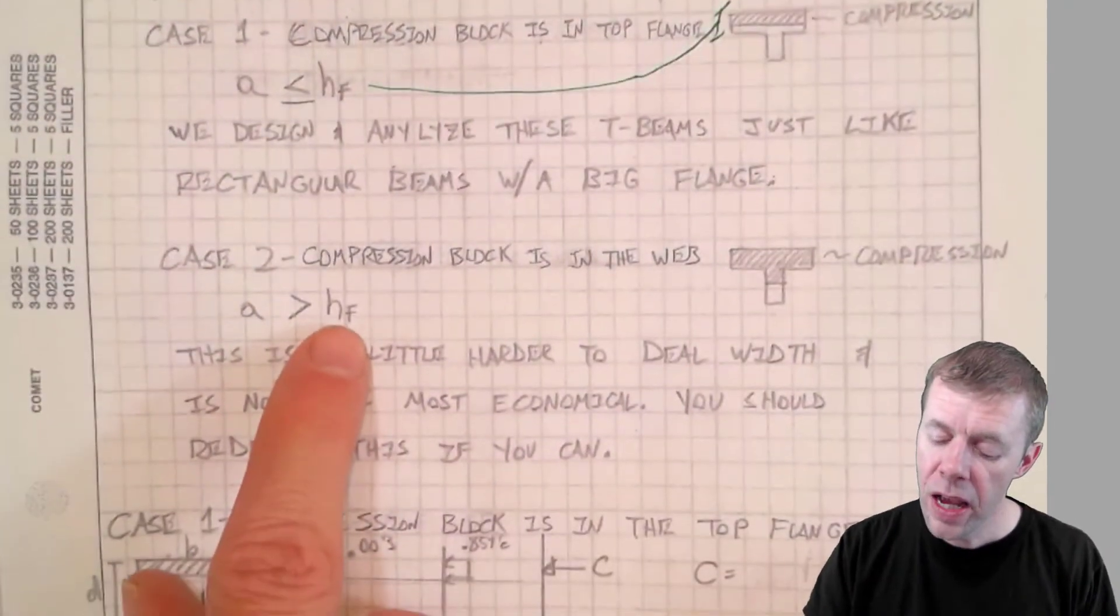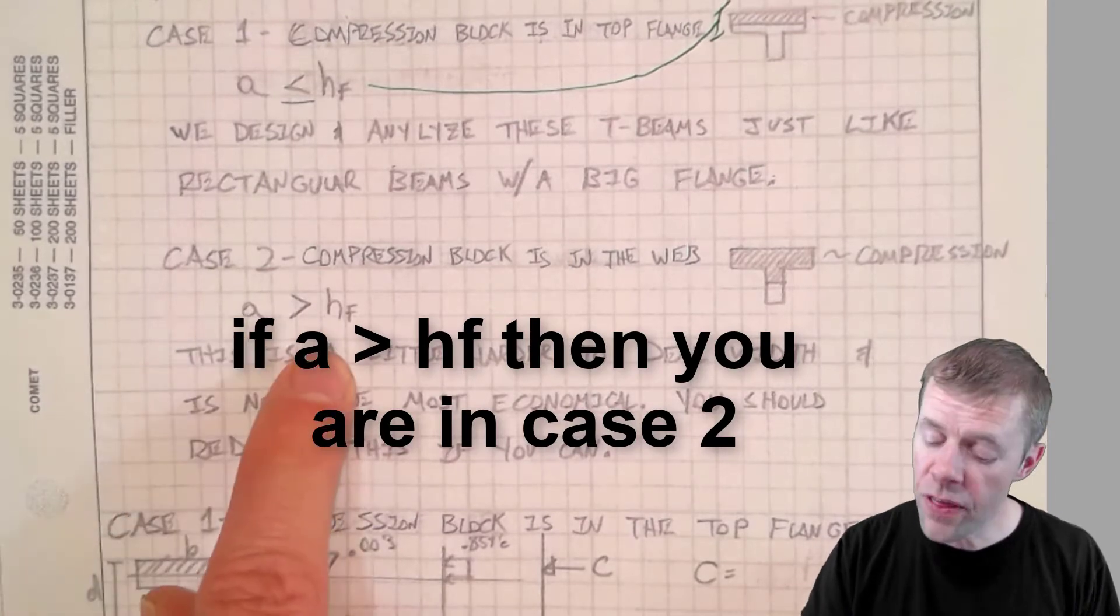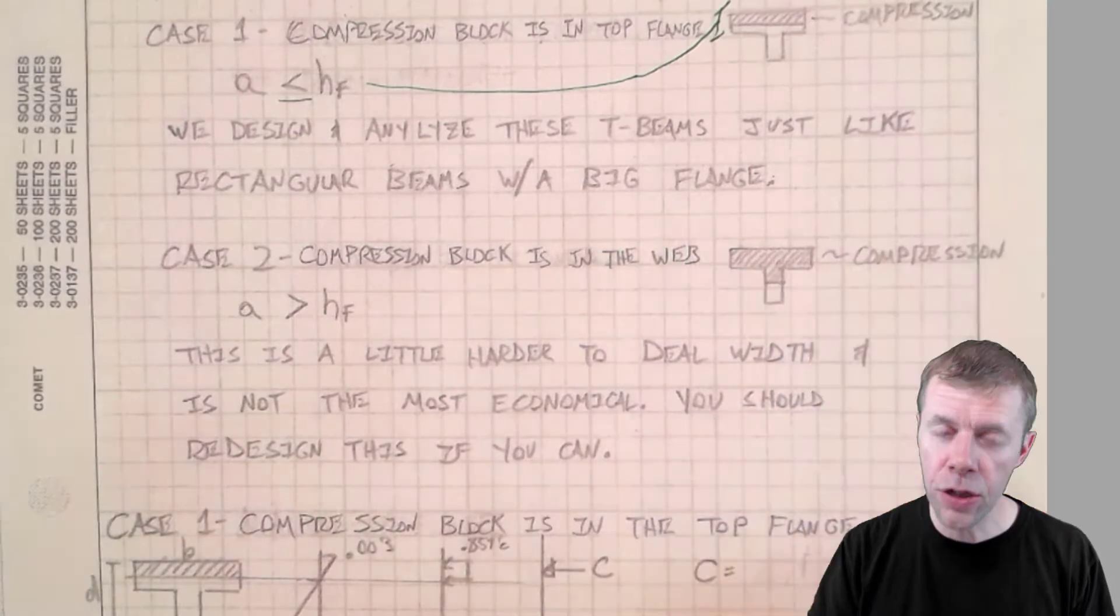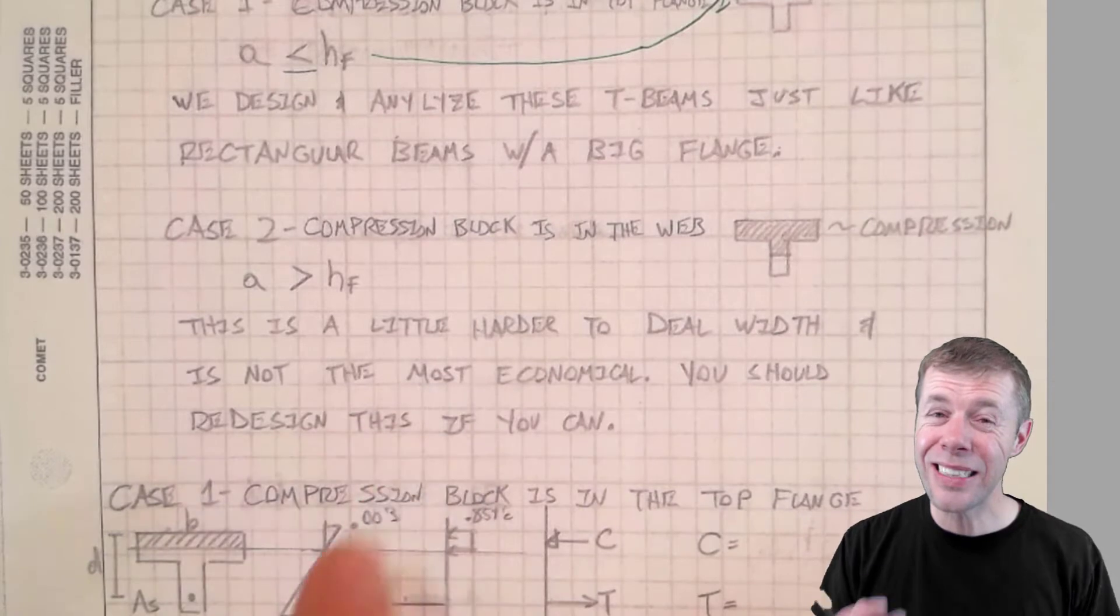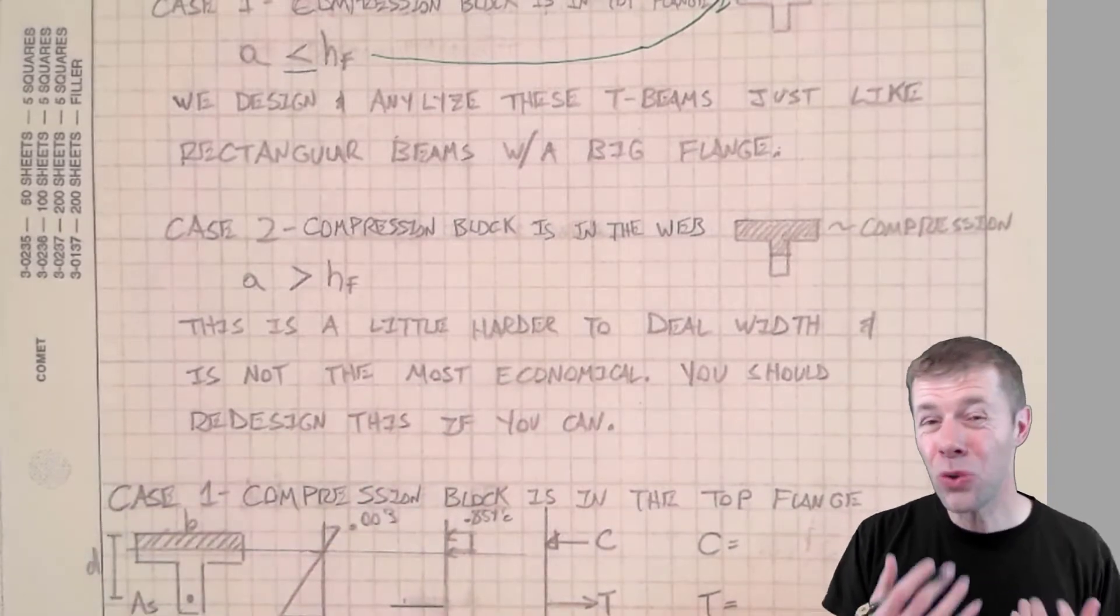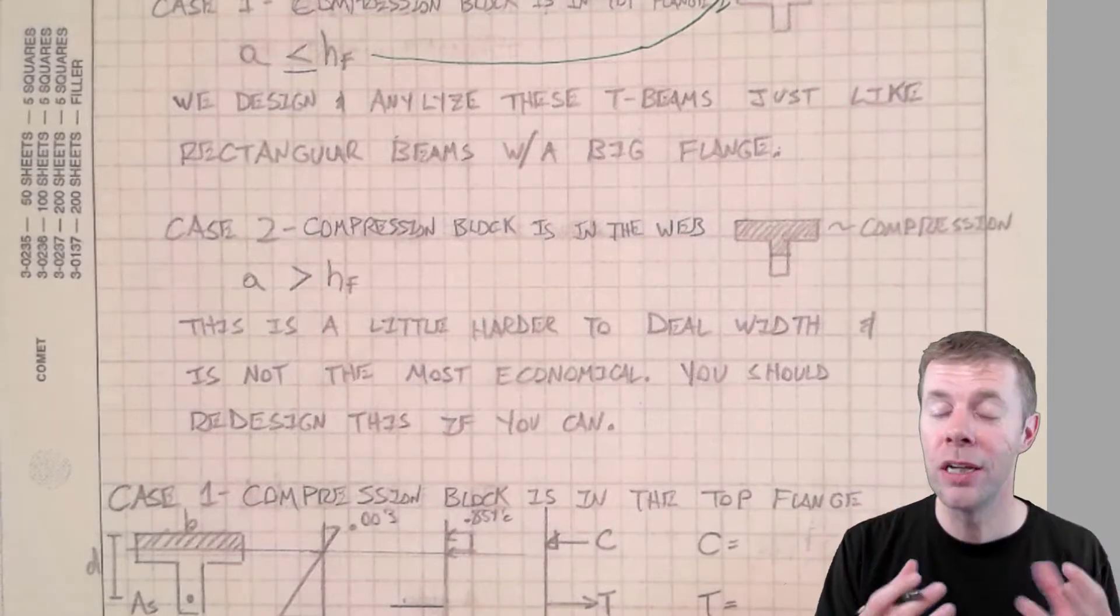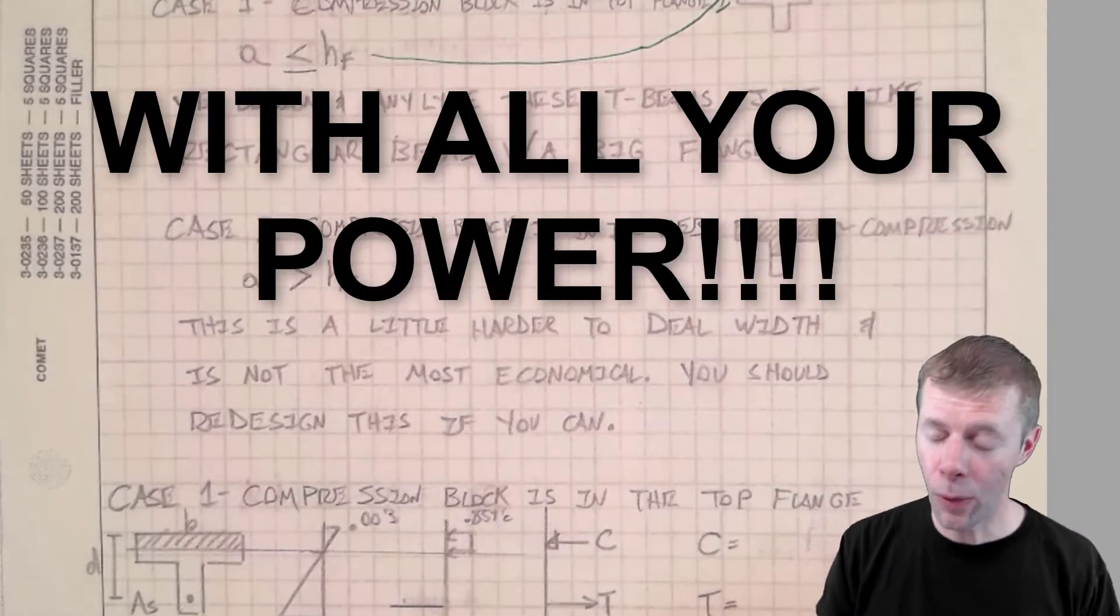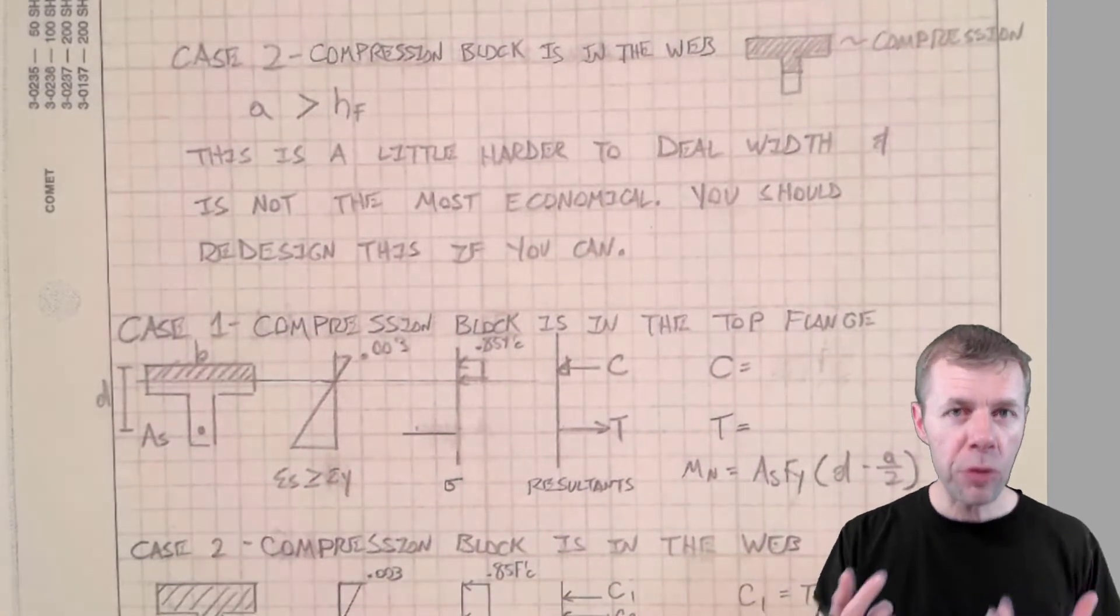If you're in case two, that is when your A, depth of the compression block, is greater than the height of your flange. So your compression block goes down partly into your web. This is a little bit harder to deal with. And it is not the most economical of shapes. And you should redesign this if you have the power to, but sometimes you don't have the power. We all want the power, right? So let's work these out and let's figure out how you would find the capacity.